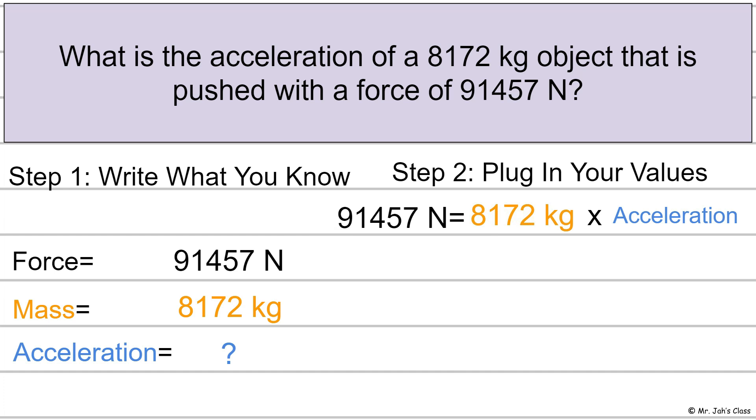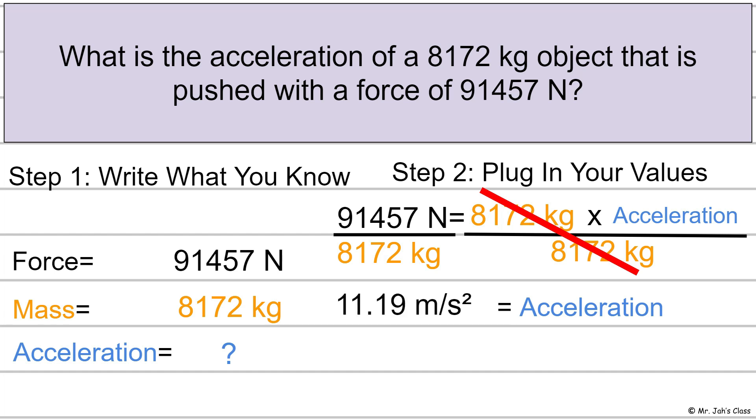So how do we solve for acceleration? What we do is we think about what is happening to acceleration. Right now, it is being multiplied by the mass. So we have to do the opposite. So we are going to divide. So that cancels it out. We're getting the variable by itself. And whatever we do to one side of the equation, we have to do to the other side. So therefore, acceleration is equal to 11.19 meters per second squared. And that is how you solve for acceleration.